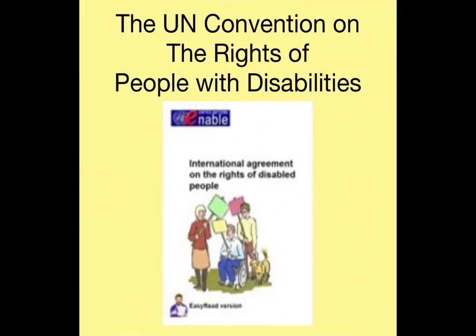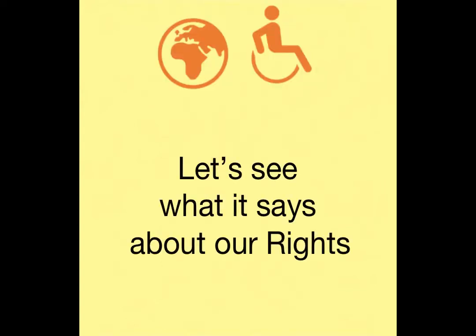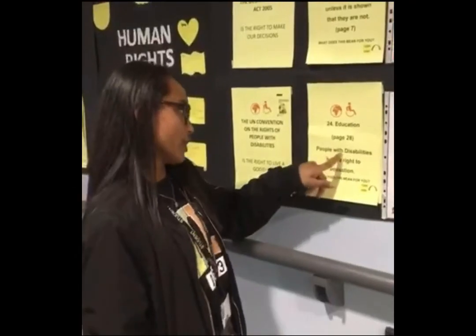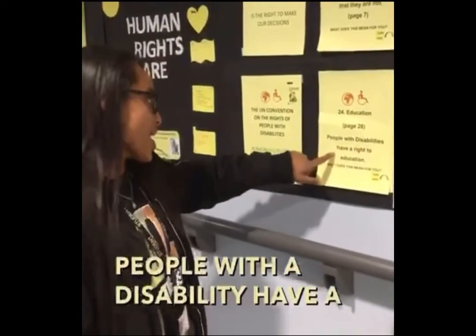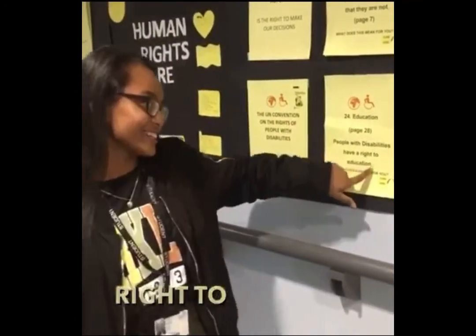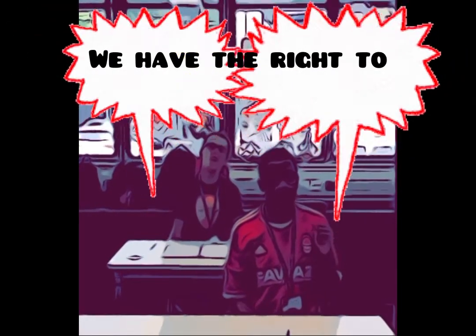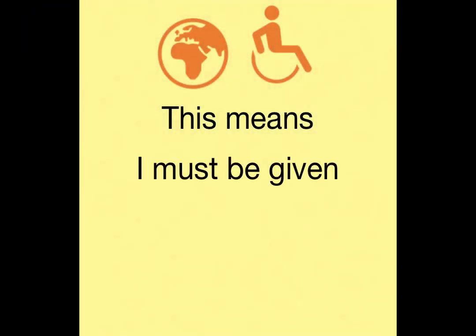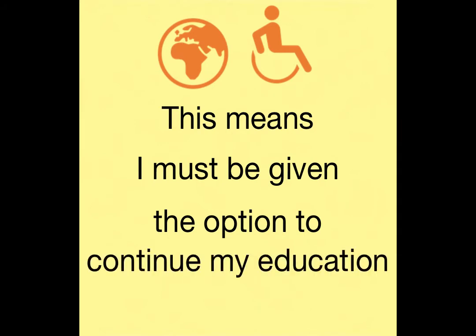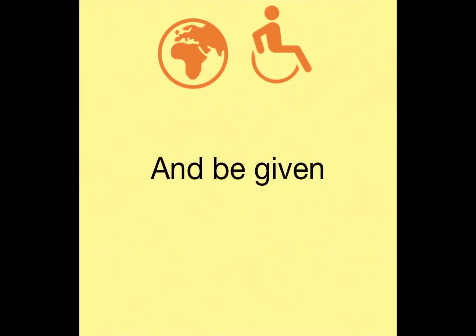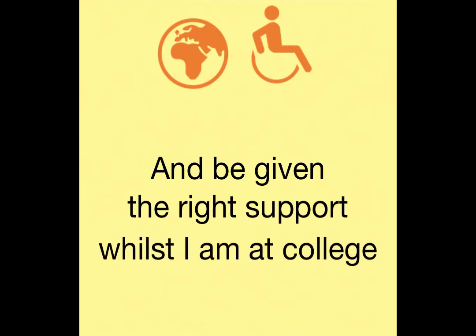This is the UN Convention on the Rights of People with Disabilities. Let's see what it says about our rights. People with disabilities have the right to education. This means I must be given the option to continue my education and be given the right support whilst I am at college. The end.